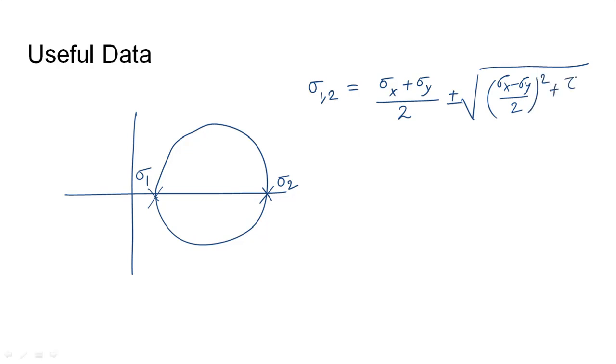If we know a solid state element on which Sigma x is exerted along the x-axis, Sigma y is exerted along the vertical axis, and shear stress has been exerted on the solid element, using these three values we can find the principal stress acting on the element.